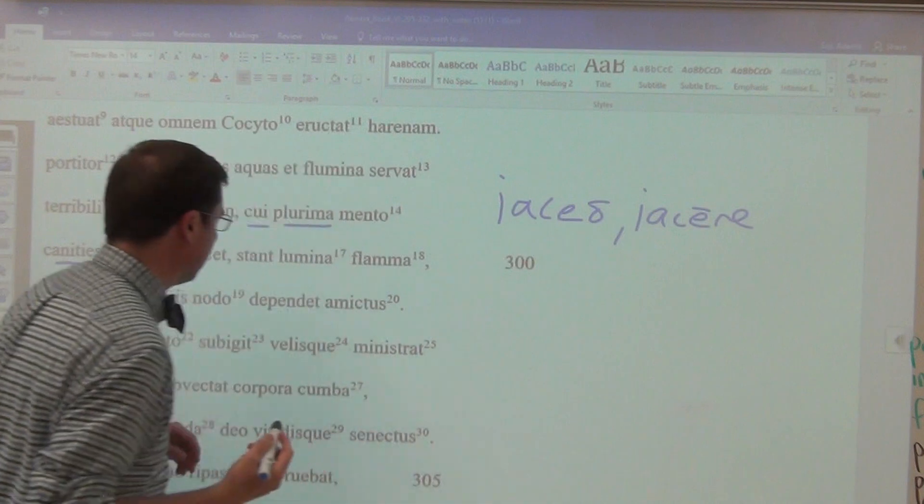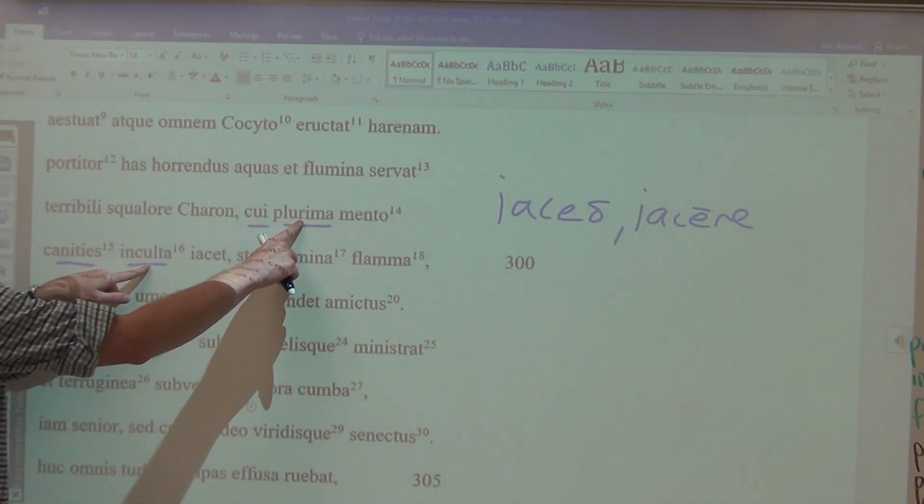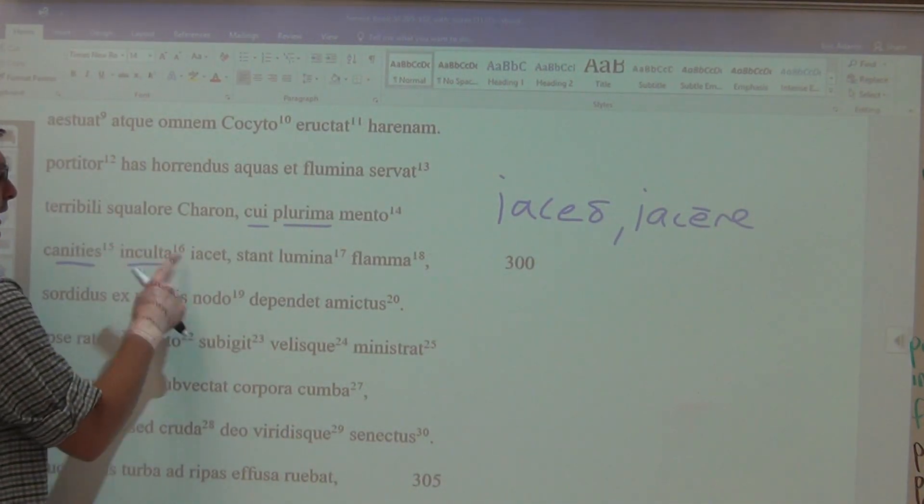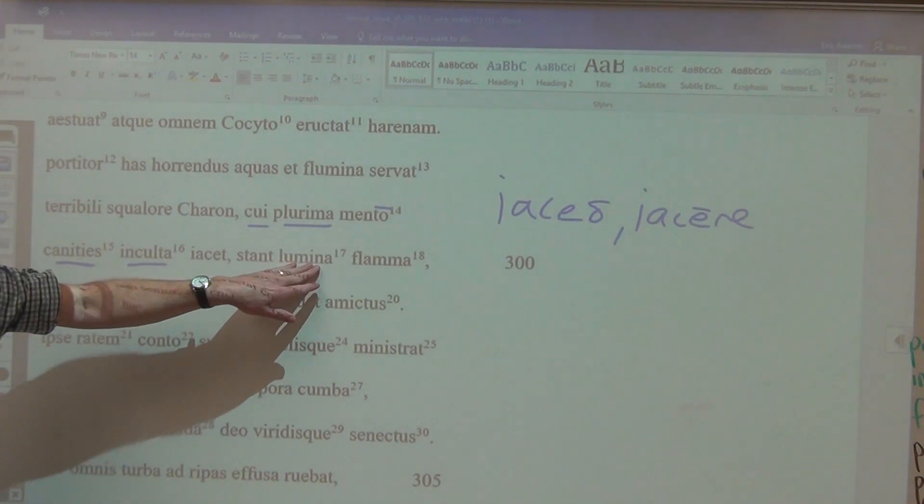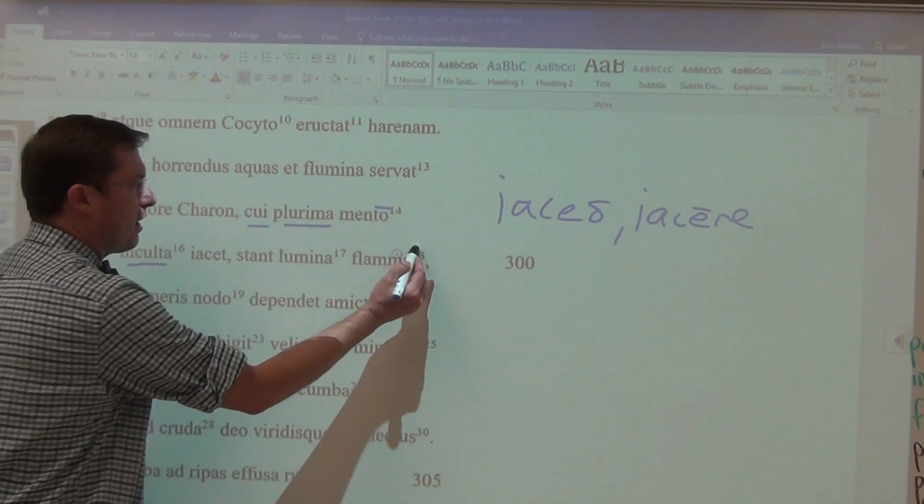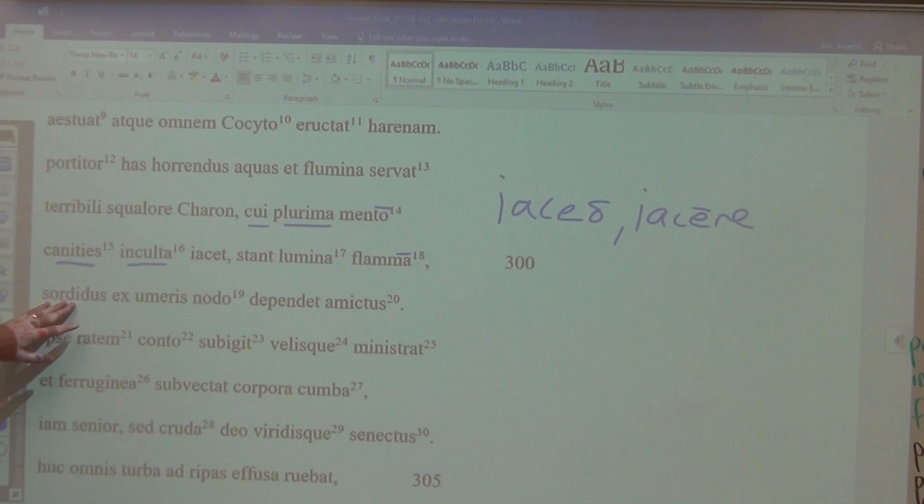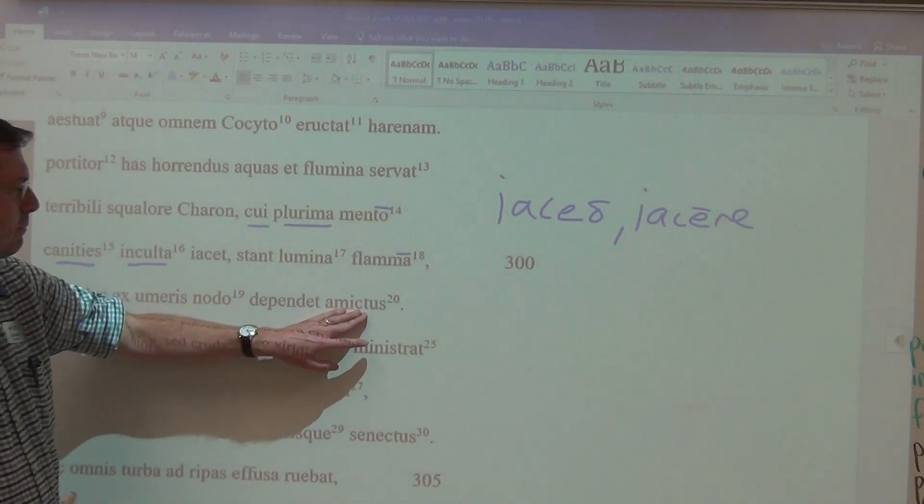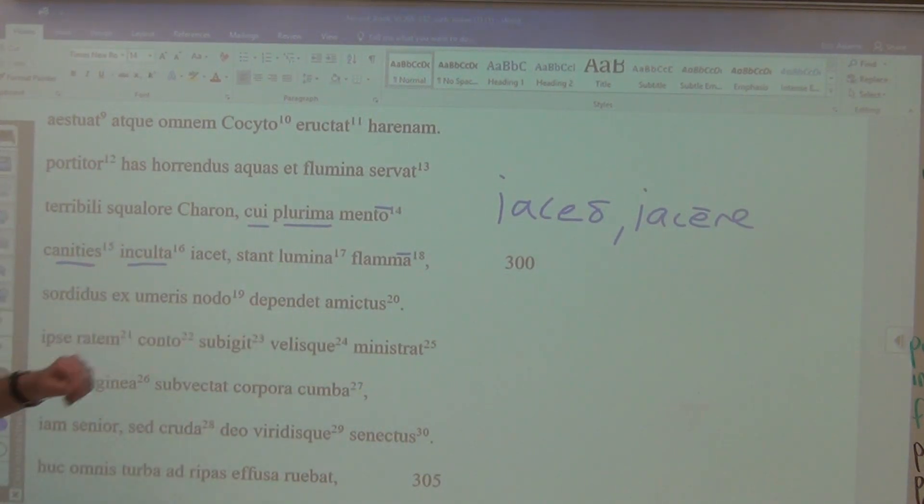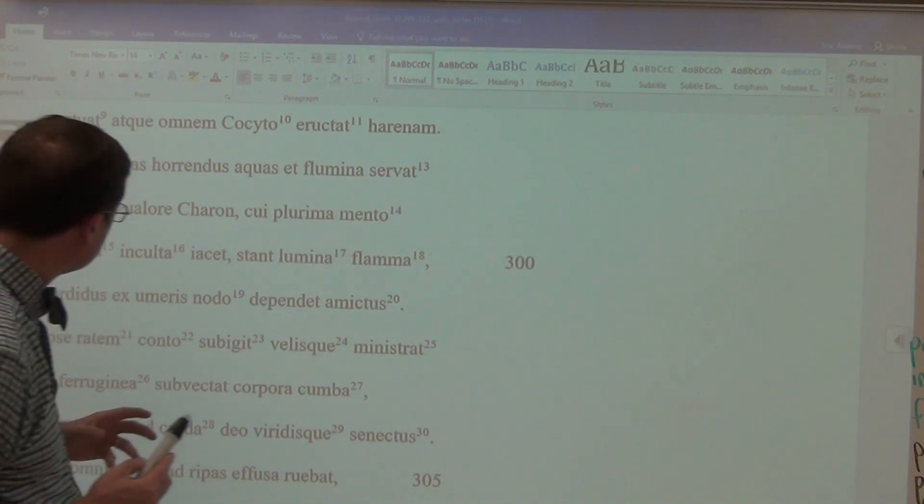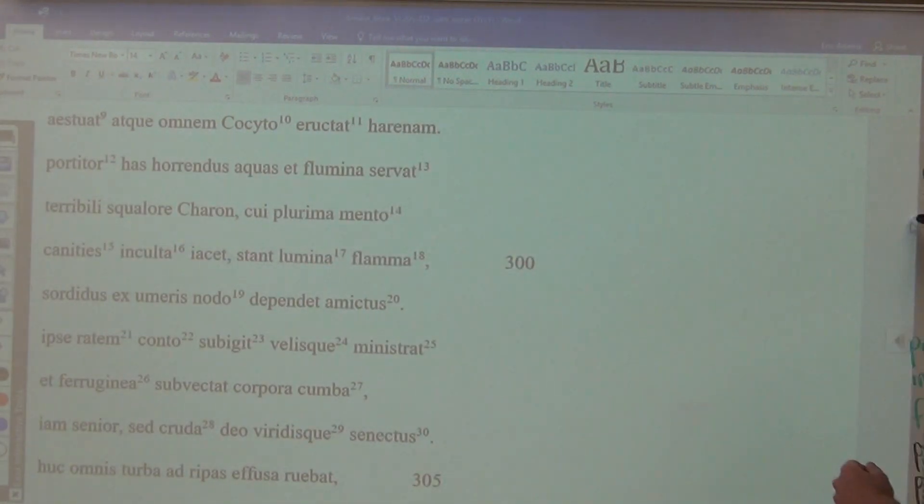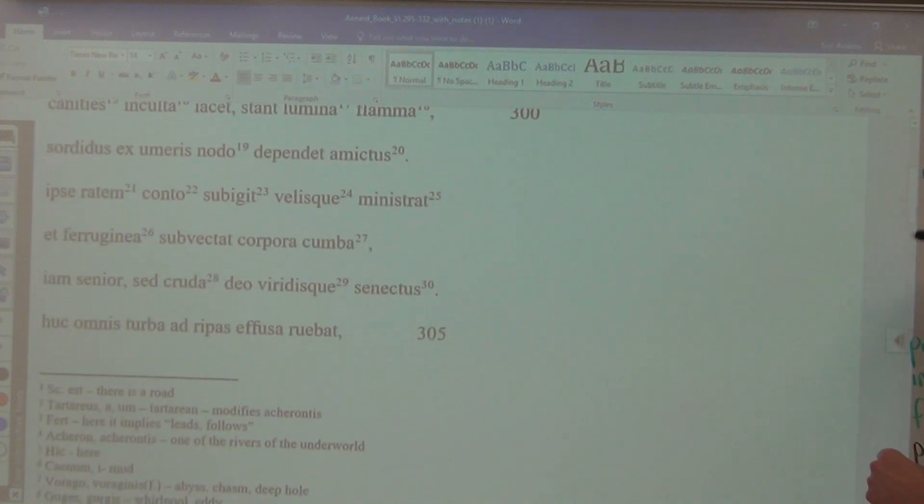Essentially, Charon is going to be described here as somewhat looking like a stereotypical homeless guy. He's going to be dirty, he's going to be squalid, and so forth. For whom, your dative of possession or reference, a very much uncultivated grayness from colo colere colui cultus, lies on his chin. And his eyes stand with a flame. He is an intense fellow. A dirty cloak, an amictus, hangs down from his shoulders in a knot.